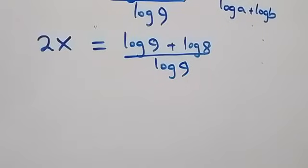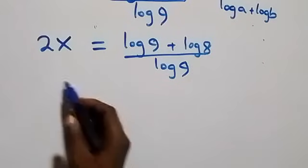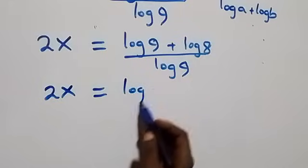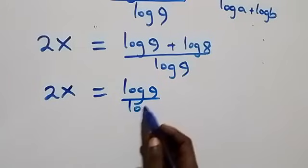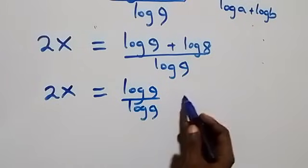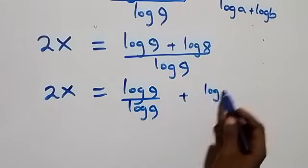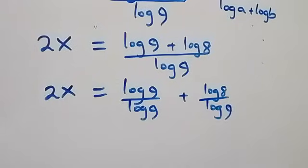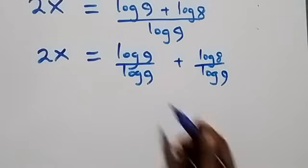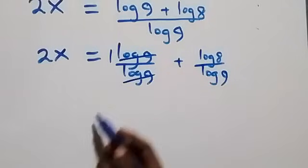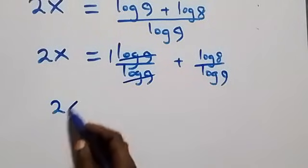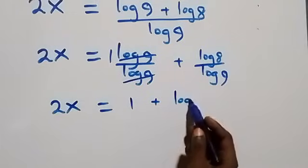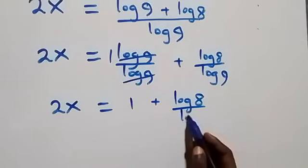So what we have becomes 2x equals log 9 plus log 8, all over log 9. We then separate this into two fractions: 2x equals log 9 over log 9 plus log 8 over log 9. The log 9 terms cancel, leaving 1, so 2x equals 1 plus log 8 over log 9.